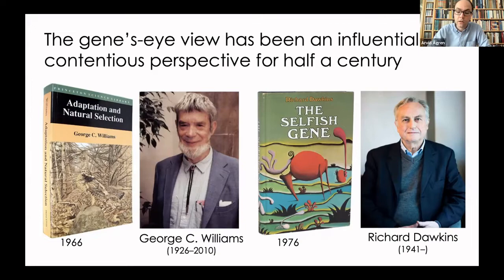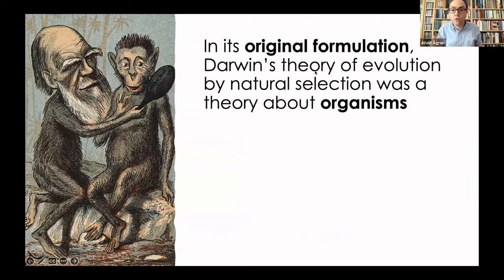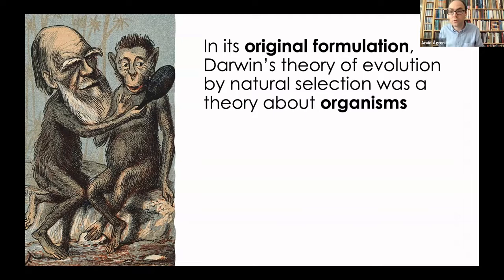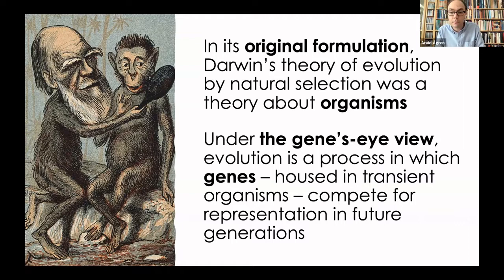To see why this way of thinking can be contentious: Darwin's original formulation of evolution by natural selection is about organisms — it is individuals that live and die, individuals that vary in how well they attract mates and reproduce. The gene's eye view, however, takes seriously the fact that it is only genes that are faithfully transmitted from one generation to the next. Therefore, genes should be the central unit of explanation. In this way of thinking, organisms are nothing but transient entities, present in one generation and gone in the next, while genes compete for representation in future generations.